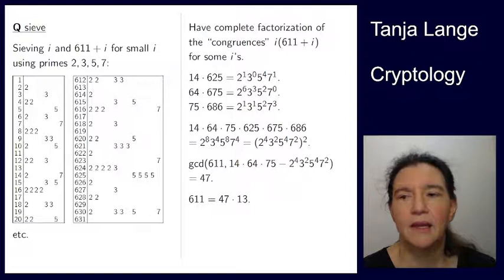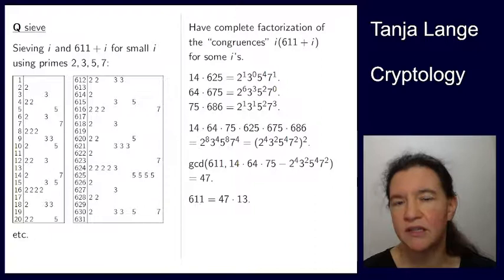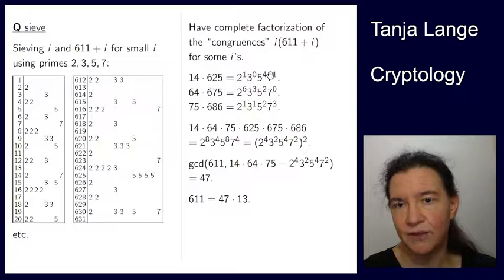These are more normal factorizations. So this is easier to explain in some sense than what I did with the Dixon's method, because it's just, well, 14 times this does factor like this. There is no reduction mod 611 coming in.